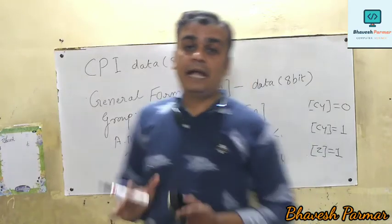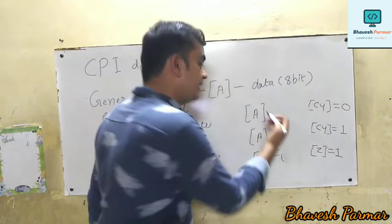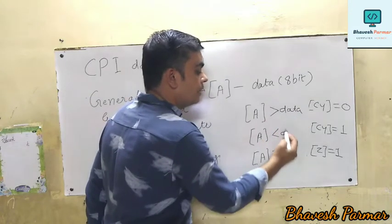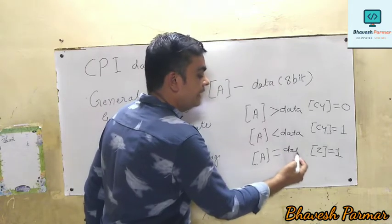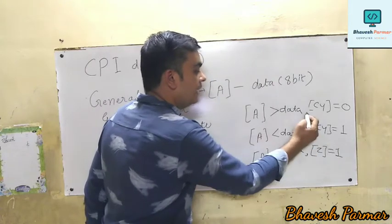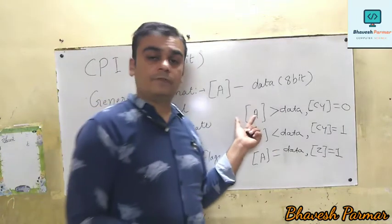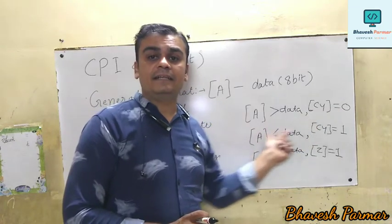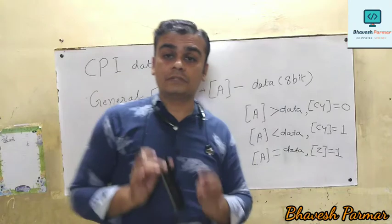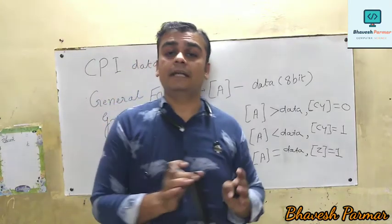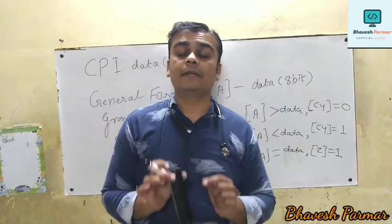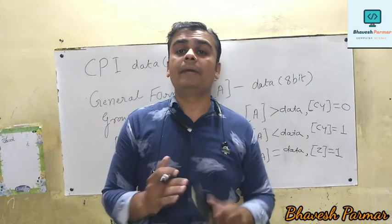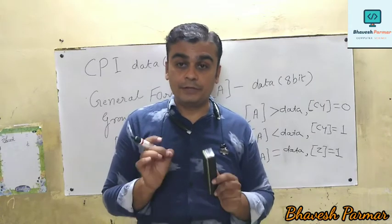For CPI, all flags may be affected. There are three possibilities: if content of accumulator is greater than data, carry flag is 0; if it is less than data, carry flag is 1; and if both data and content of accumulator are same, Z flag is 1. In this way we have studied the compare instruction.